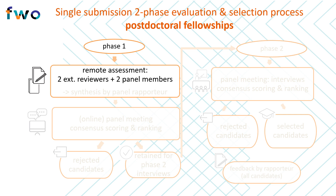A total of four written evaluation reports are thus prepared in the first phase of the selection process. After the four independent evaluations have been submitted, the rapporteur can get to work. The rapporteur has already been appointed by the scientific chair at the beginning of the first phase but does not have a specific task at that time. Once the internal and external reviews are available, the rapporteur has to integrate these four reviews into a global evaluation, in which they also may take their own assessment of the application into account.